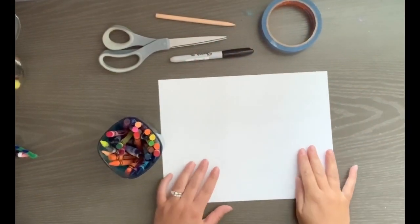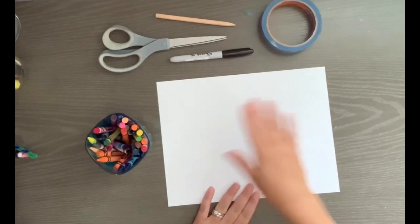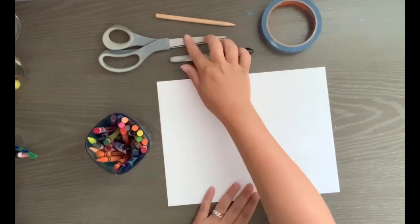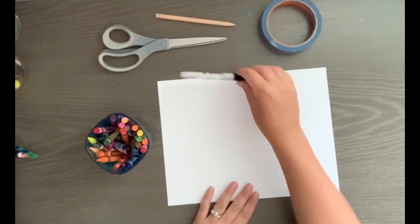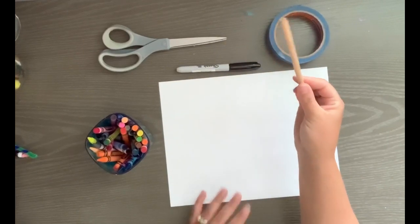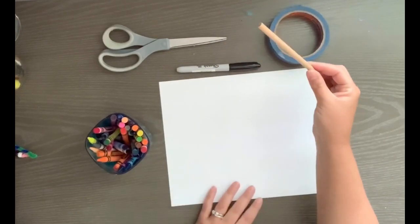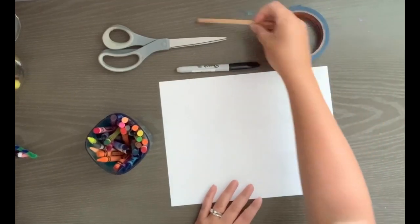For our interactive bubble wand drawing project you're going to need a piece of paper, something to color with, a pair of scissors, I have a sharpie to draw with, you can use a pencil, some tape, and then some kind of stick to glue or tape your wand onto. This is just an old stick I had lying around.